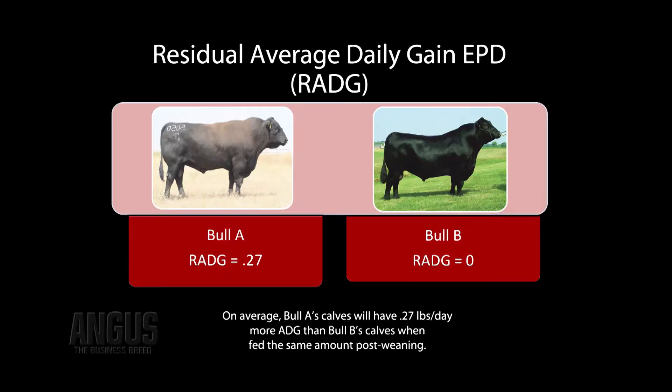and we can interpret that to mean that on average, we expect Bull A's calves to gain 0.27 pounds more than Bull B's through the post-weaning phase, while consuming the same amount of feed.